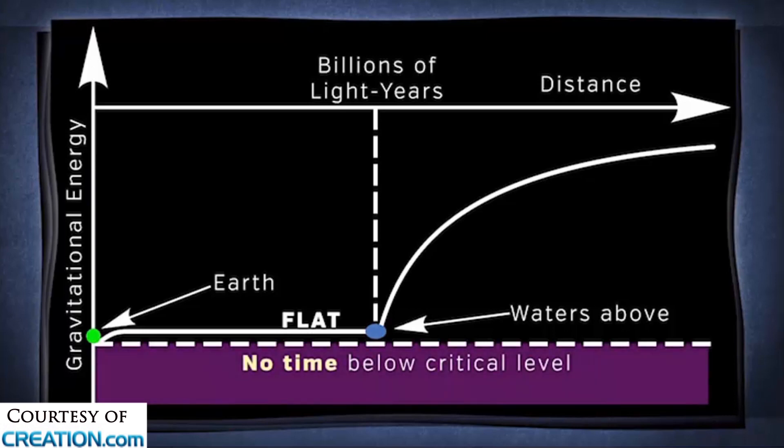So what happens to time is that below that critical level, there is no time. Time doesn't tick. You don't notice, you can't think, and there is no light, so it's dark.